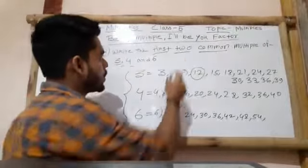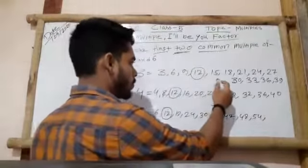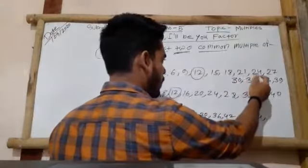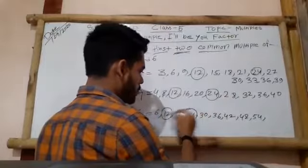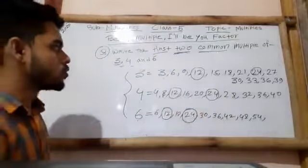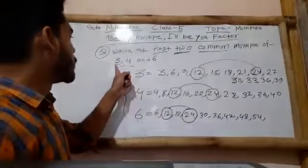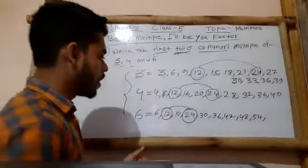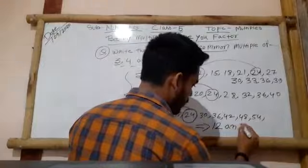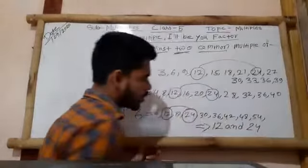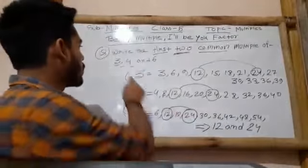We have to find another one because the question asks for two common multiples — the first two common multiples. Another common multiple will be 24. You can see 24 is also present in the multiples of 6. So these two numbers — 12 and 24 — are the common multiples of 3, 4, and 6. The answer is 12 and 24. This is the process to determine the first two common multiples of 3 numbers.